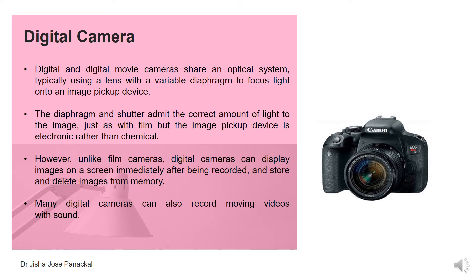Digital and digital movie cameras share an optical system, typically using a lens with a variable diaphragm to focus light onto an image pickup device. This diaphragm and shutter admit the correct amount of light to the image, just as with film, but the image pickup device is electronic rather than chemical.